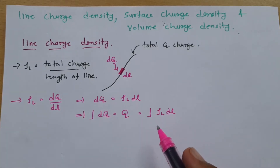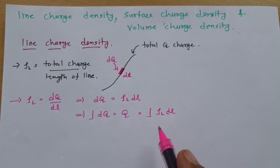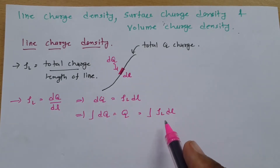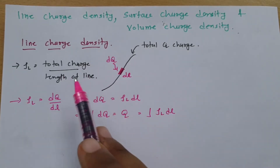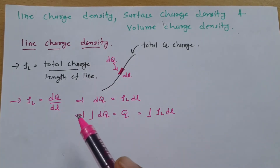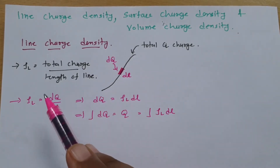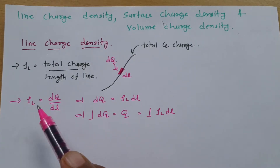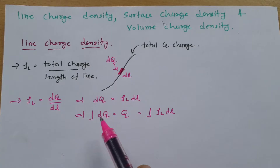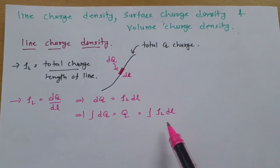So for calculating line charge density examples: for uniform charge distribution, total charge divided by total length gives line charge density. When line charge density is a function of coordinates, ρL = dQ/dL, and total charge is obtained by integration of line charge density with respect to length.